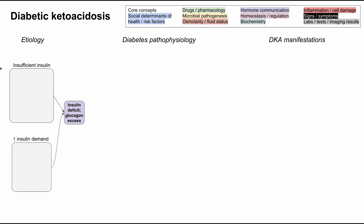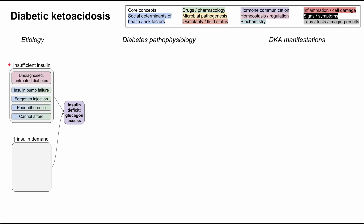The etiologies can be grouped into two big categories. The first is insulin insufficiency, and the second is increased demand for insulin that the body cannot meet. Within insufficient insulin, you can have undiagnosed or untreated diabetes, and the rest are social determinants of health and pharmacology causes: the insulin pump can fail, the patient can forget their injection, have poor medication adherence, or not be able to afford their insulin.